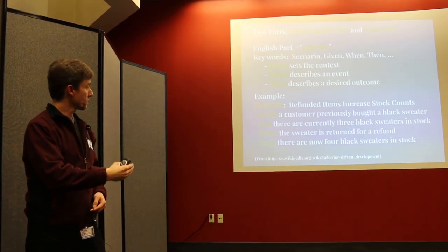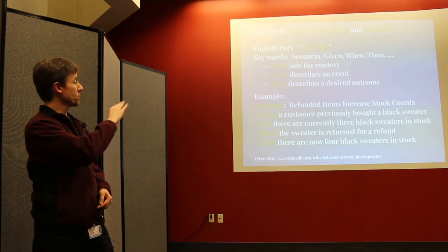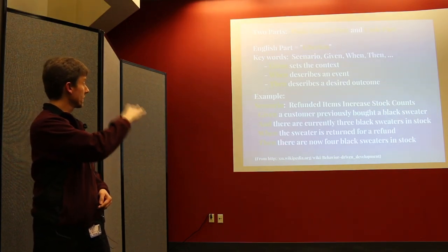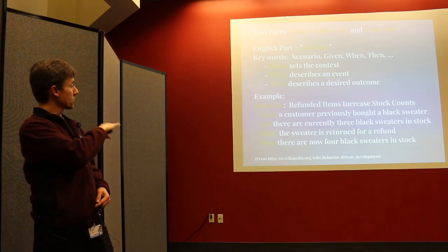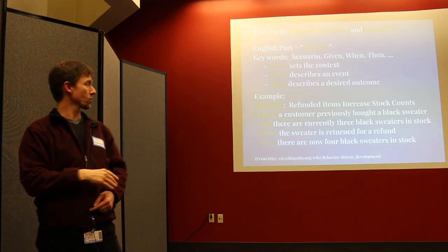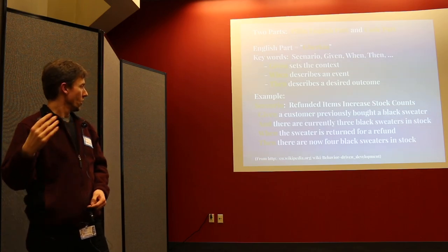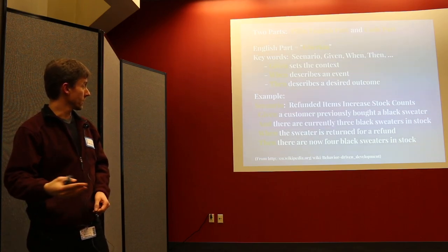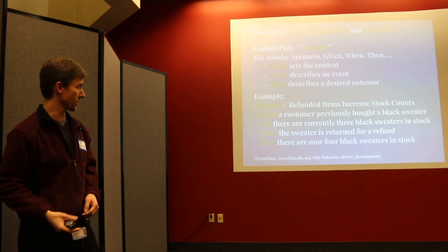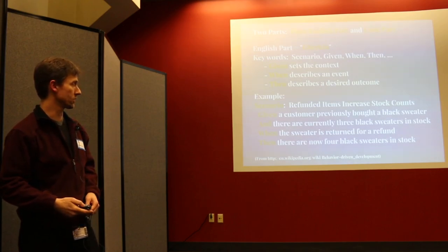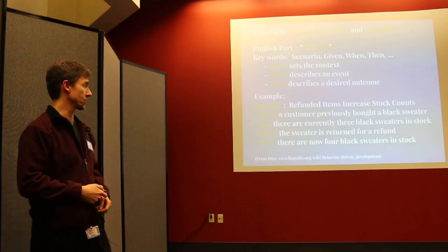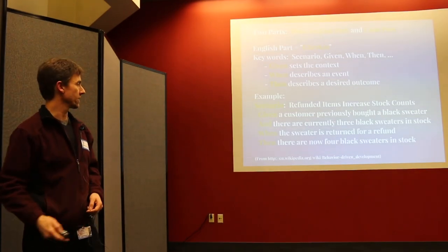So the scenario is like a test name. So this scenario is refunded items increased stock counts. The customer, given a customer previously bought a black sweater. Anytime you see and, you're just adding on to the thing. So adding to the context here. So given the customer previously bought a black sweater and there are currently three black sweaters in stock. When the sweater's returned for the refund, so that's the key event here, then our expected result, there are now four black sweaters in stock. So it should be pretty clear to everyone what's going on. The business analyst is going to understand that. So should the QA and developer.